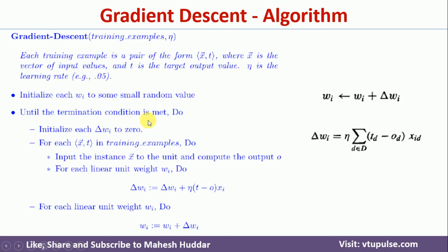What we do in these steps is we update the weights. The weight update equation looks like this: w_i = w_i + Δw_i, where w_i is the old weight. To this old weight, we add the change in weight. That change in weight is always equivalent to n (the learning rate) multiplied by the summation of (t_d minus o_d) over all training examples, multiplied by x_id, where t_d is the target output, o_d is the calculated output, and x_id is the d-th input. Once you get Δw_i, we add it to w_i to get the new weight.